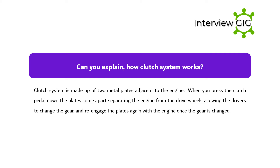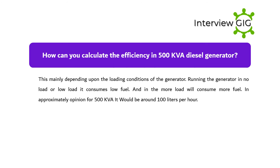Can you explain how the clutch system works? The clutch system is made up of two metal plates adjacent to the engine. When you press the clutch pedal down, the plates come apart, separating the engine from the drive wheels, allowing the driver to change gear and re-engage the plates again with the engine once the gear is changed.